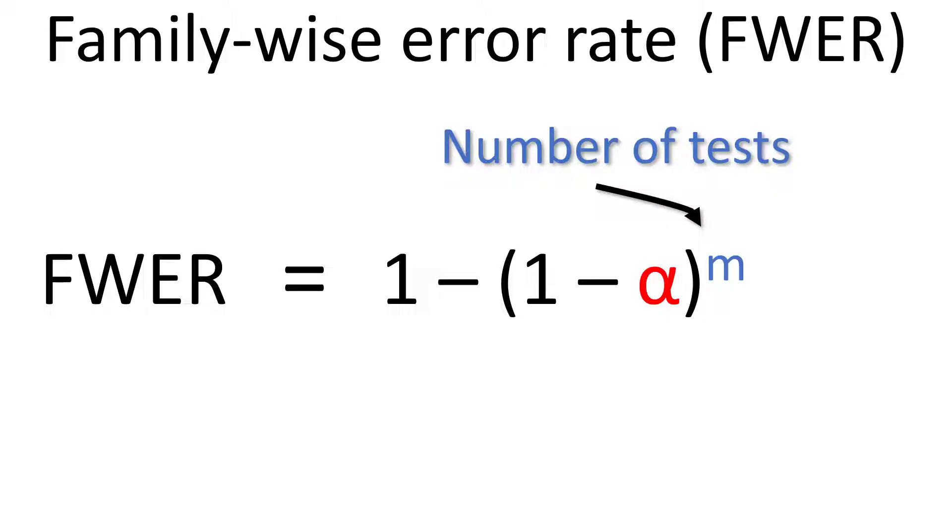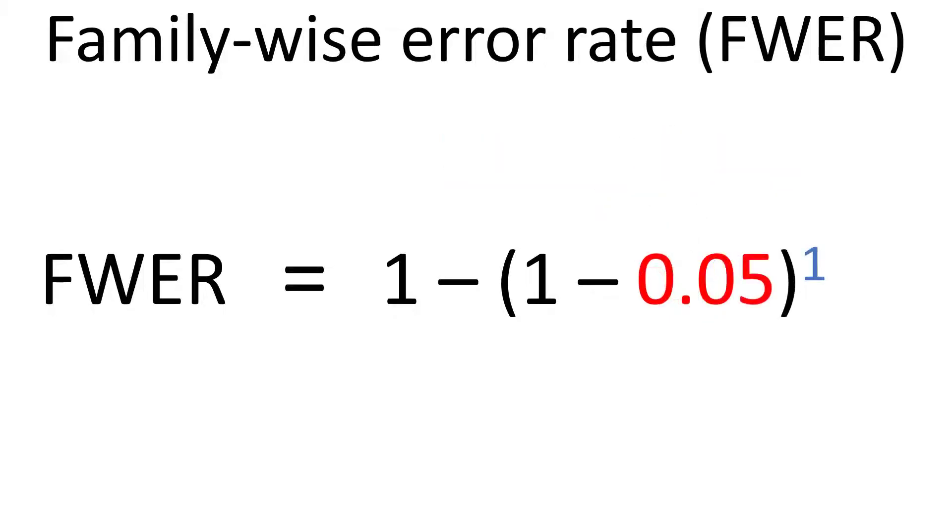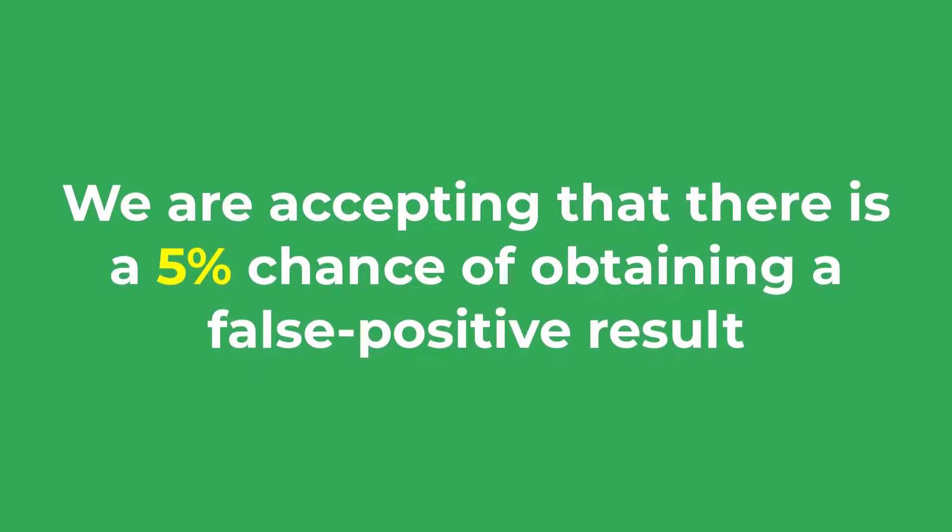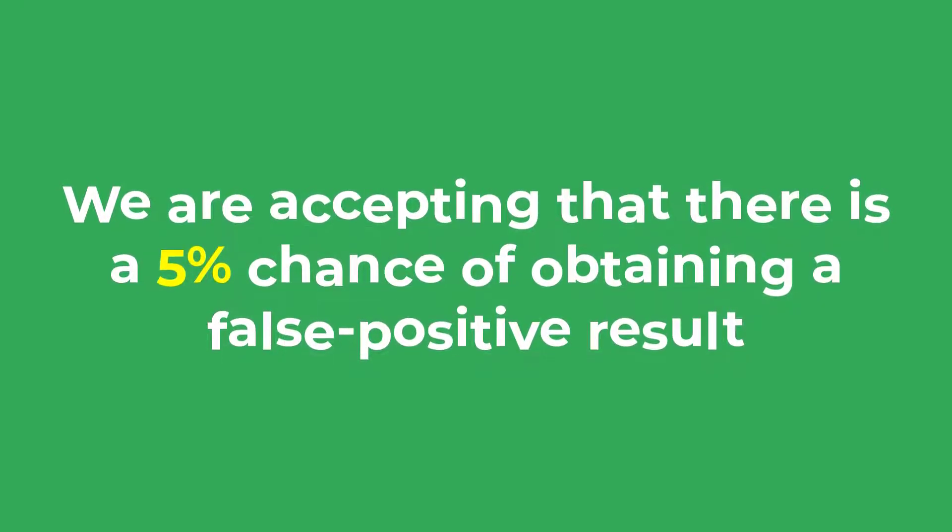For a single experiment the alpha as mentioned is usually 0.05 and m in this case would be 1 because there is just 1 test. This would mean that the family-wise error rate is 0.05 or 5%. So we are accepting that there is a 5% chance of obtaining a false positive result. And we are generally fine with this.